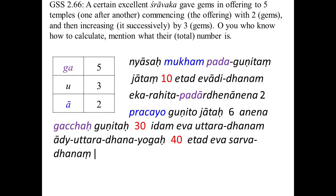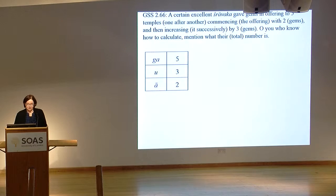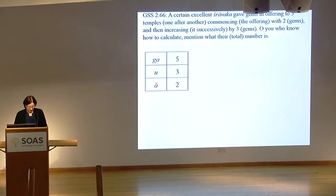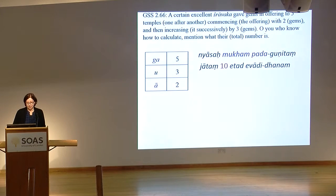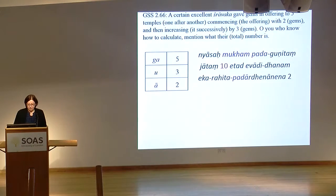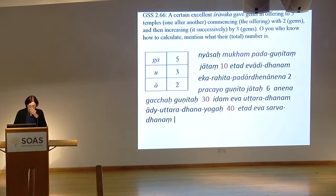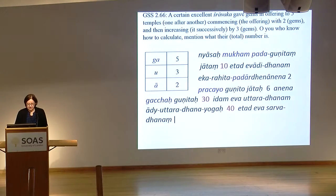Let's do quickly an example. We have the case of a Shravak who offers two gems at the beginning and increases by three gems. We have to calculate how many we get after five terms. You calculate the beginning multiplied by the number of terms, which is ten — this is the adi dhana. Then the number of terms minus one, divided by two, is two. You multiply by the common increase to get six, then multiply by the number of terms to get 30 — this is the uttara dhana. Adding both gives 40, which is the total sum.